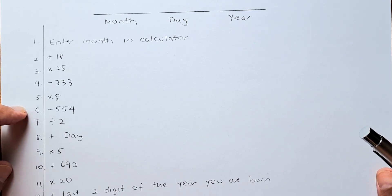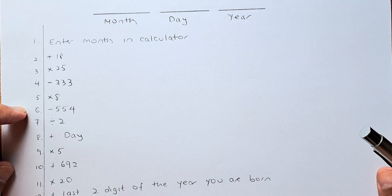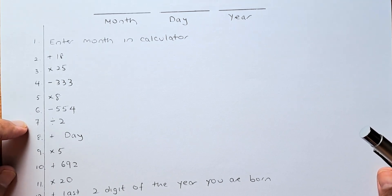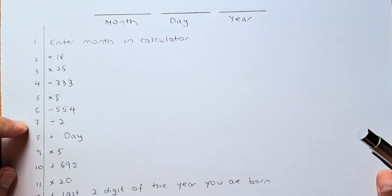Subtract 554. You're going to then divide by 2. Are you following me? Great!